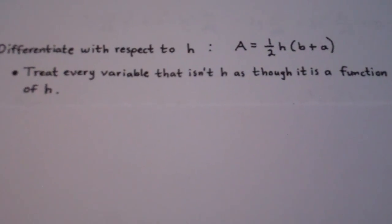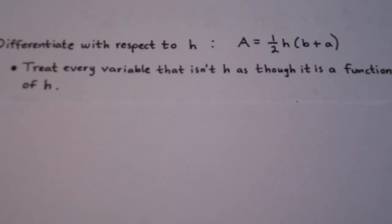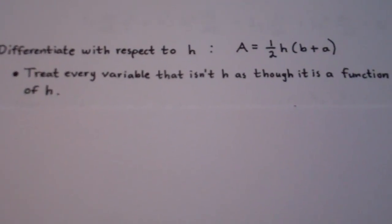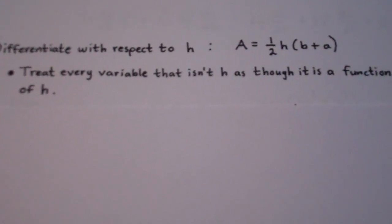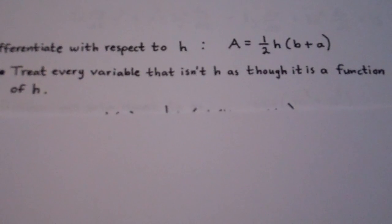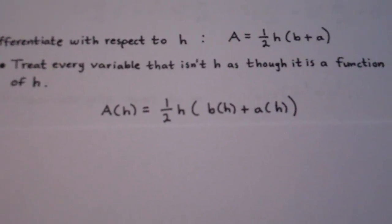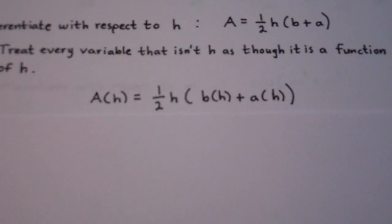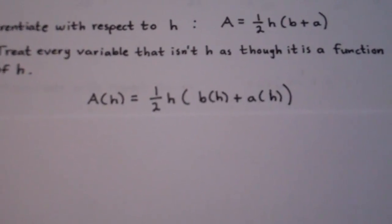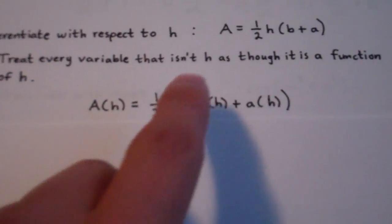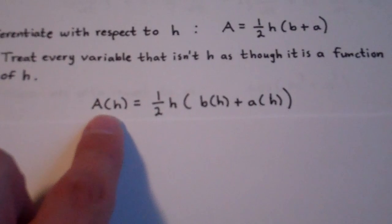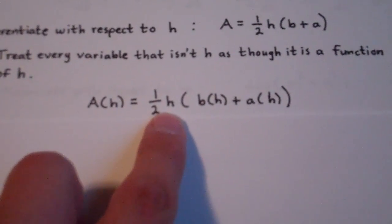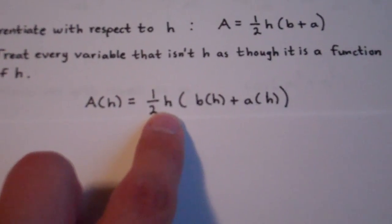Well, to do this, we treat every variable that isn't h as though it is a function of h. So what I did right underneath here is I rewrote the equation with all the variables written as functions of h. So rather than having a here, I wrote a of h — I used function notation. This variable is already h, so it just stays h.